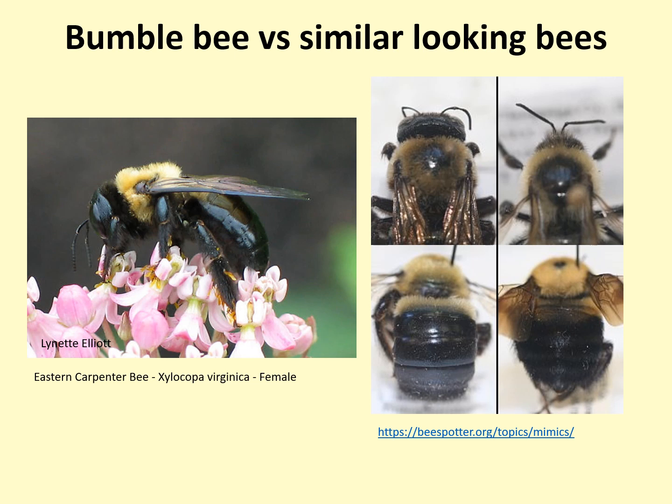Carpenter bees are commonly confused with bumblebees, but carpenter bees have shiny, hairless abdomens, unlike bumblebees which are covered in hair. Carpenter bees also have larger, wider heads proportionally. The pictures below compare a carpenter bee on the left in each picture to a bumblebee on the right. Note the wide head and shiny abdomen on the carpenter bee.